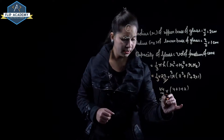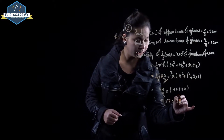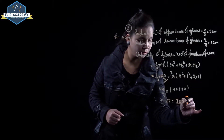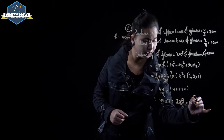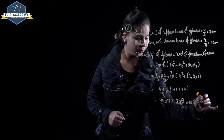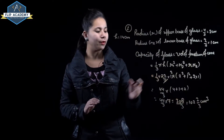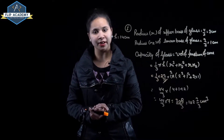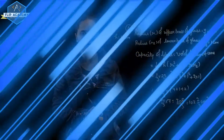It is equal to 44 upon 3 into 7, so it is equal to 308 upon 3, and that is equal to 102 and 2 upon 3 centimeter cube. So volume of glass is equal to 102 and 2 upon 3 centimeter cube. Question number 1 is complete.